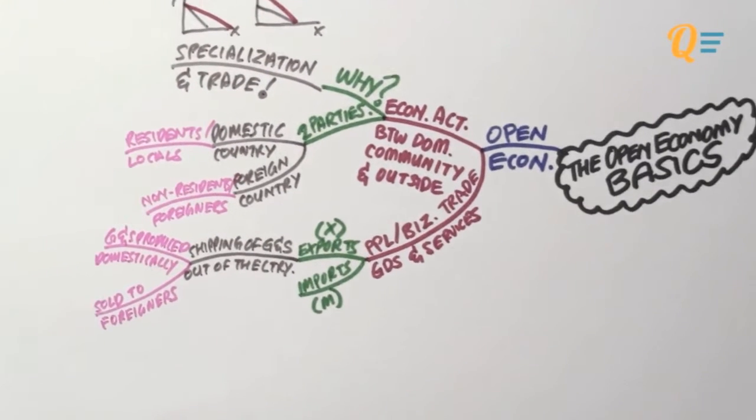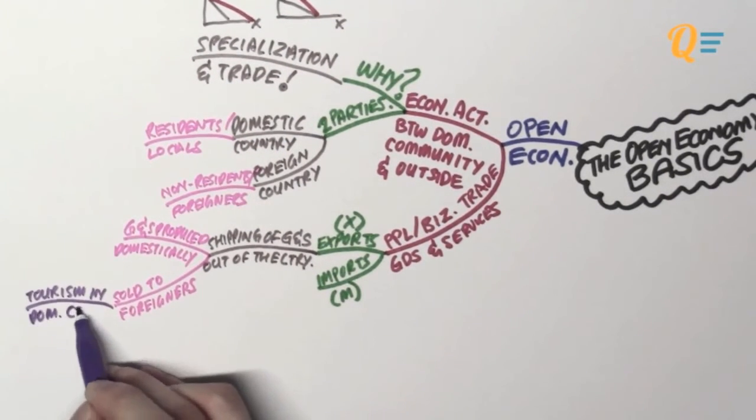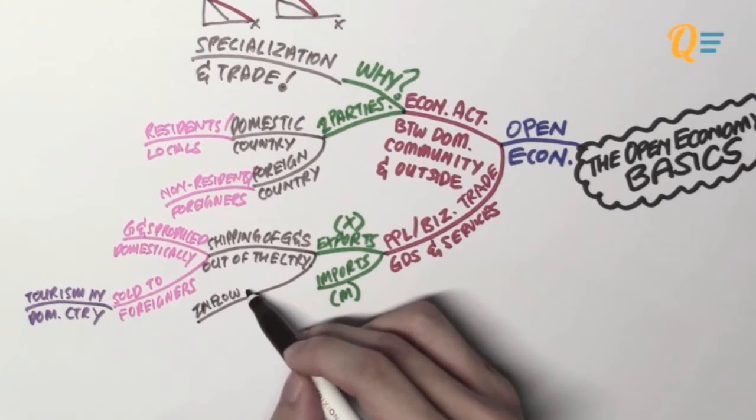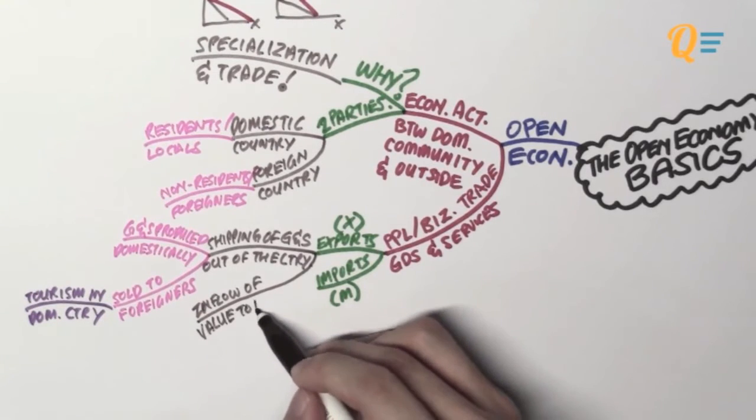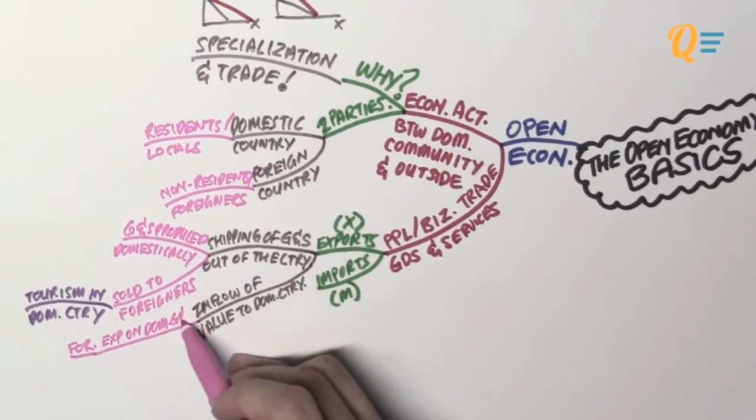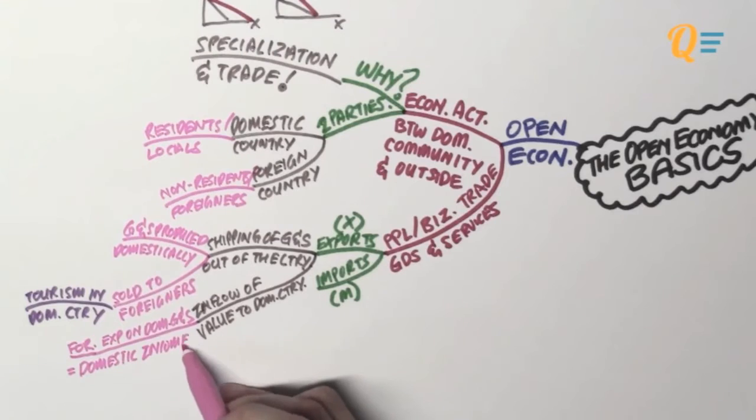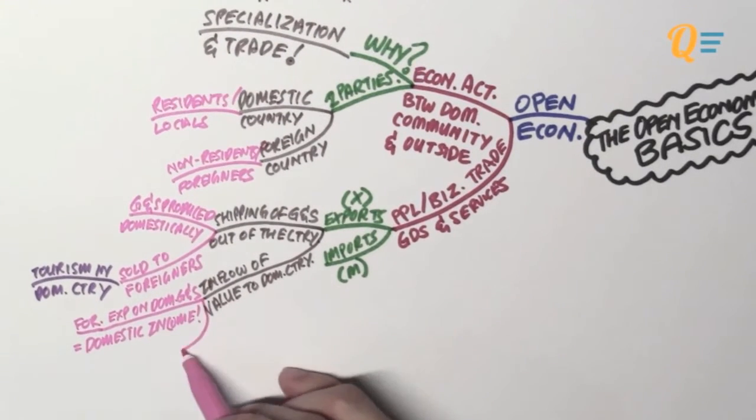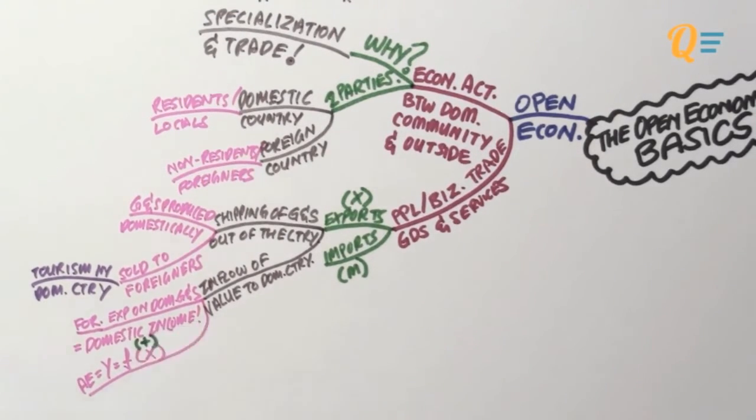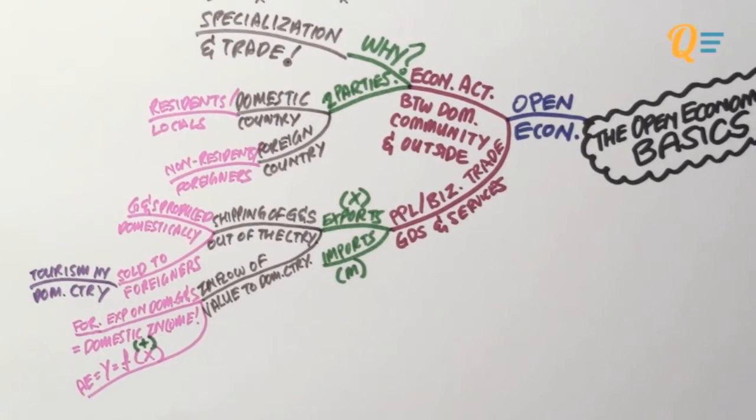And exports also includes tourism into the domestic country. Why? Because you've got foreigners coming to your home country who are non-residents and they are buying your stuff. So knowing this, another way to explain exports is that these are actually inflows of value to the domestic country. Well, why is it an inflow since we are selling stuff? Well, I'm talking about inflow of value. And that is because any foreign expenditure on domestic goods and services is actually domestic income. It is income to the home country. They are the ones that created the goods and services. And that is why aggregate expenditure and the GDP is going to have a positive relationship with exports. When exports increase, your AE and your income is going to increase.